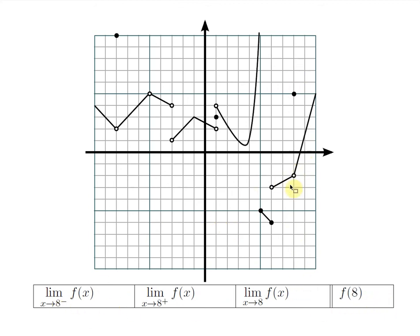At x equals 8, for the limit on the left, hide with a vertical ribbon, travel along the graph, and guess a y-value of negative 2. So the limit of f of x as x approaches 8 from the left equals negative 2. For the limit on the right, step a little to the right and travel in along the graph — you'd guess a y-value of negative 2 again. Since these numbers match, the two-sided limit is also negative 2. Finally, the actual y-value when x equals 8 is given by a solid point up here, and that y-value is 5.